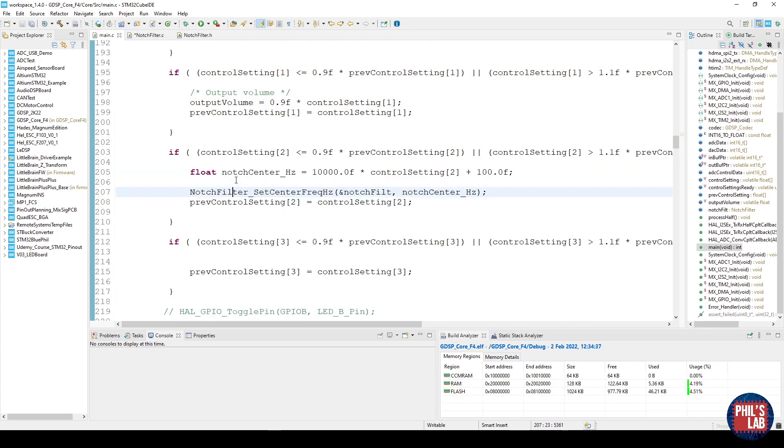My second control is my output volume control to control the overall level that's coming out of my system and then the third control is simply to set the notch center frequency. And this has a minimum of 100 hertz and can go up to 10100 hertz. Again calling my set center frequency. And that's all there is to it.